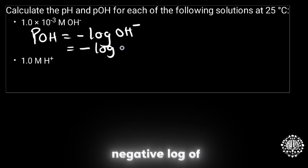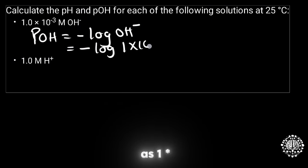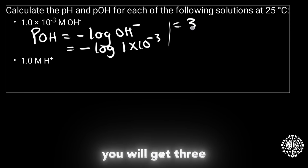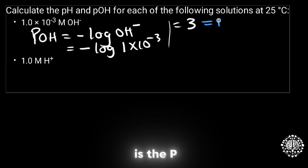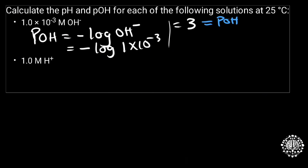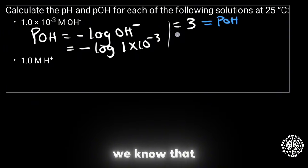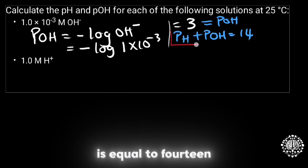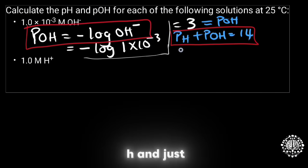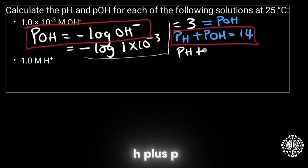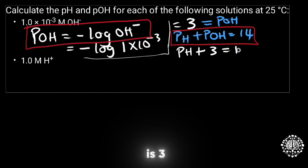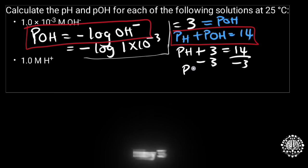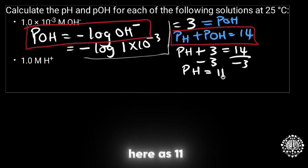To get the pOH, we take the negative log of OH⁻, which is given as 1 times 10 to the power negative 3. Doing this in your calculator gives you 3 — so the pOH is 3. For the pH, we know that pH plus pOH equals 14. Substituting, pH plus 3 equals 14. Subtracting 3 from both sides gives us pH equal to 11.